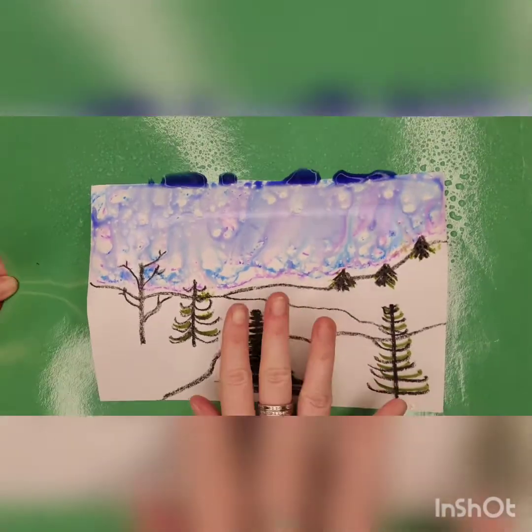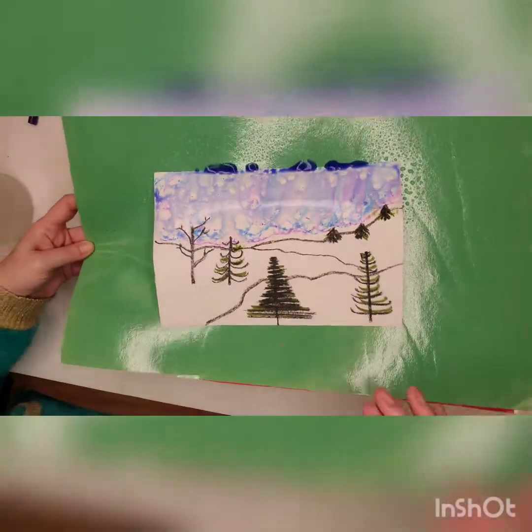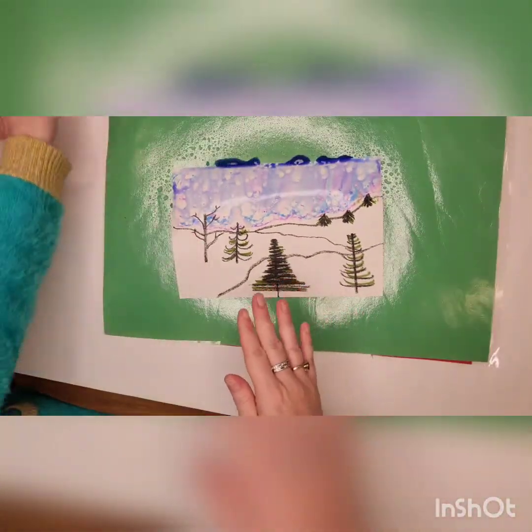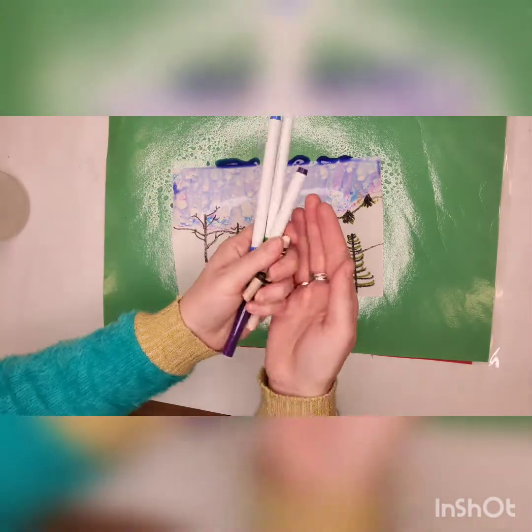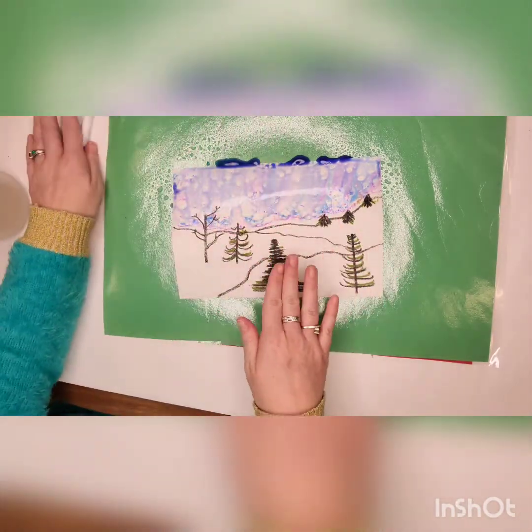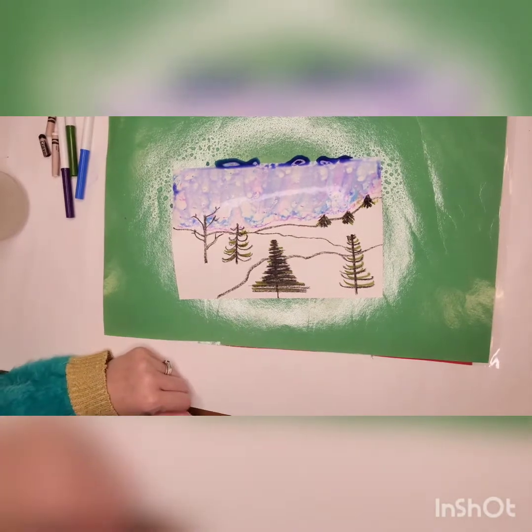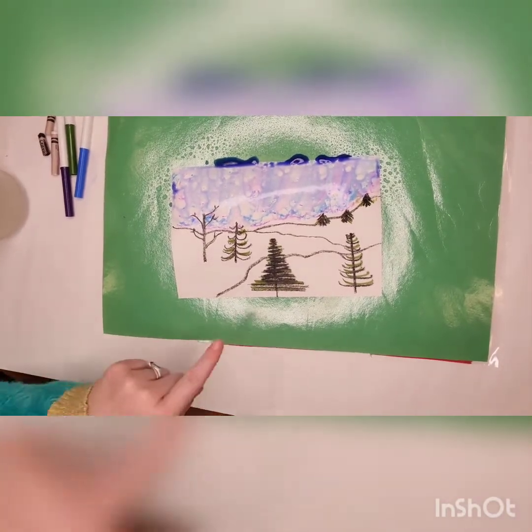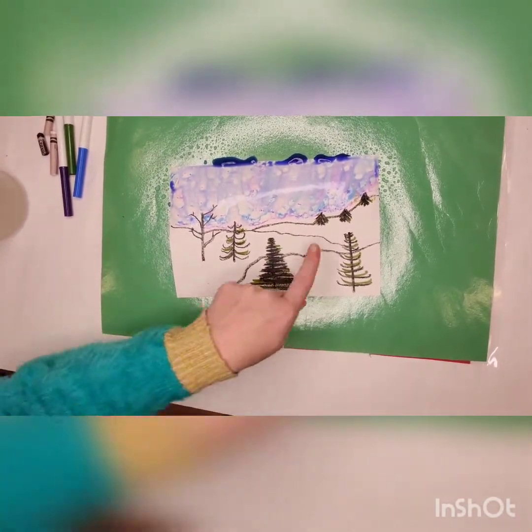Now we're going to take this and set this on the drying rack. And from here on out, you can put the rest of your supplies away. We're going to let this dry and that's that. We made ourselves a winter landscape with a foreground, a middle ground and a background.